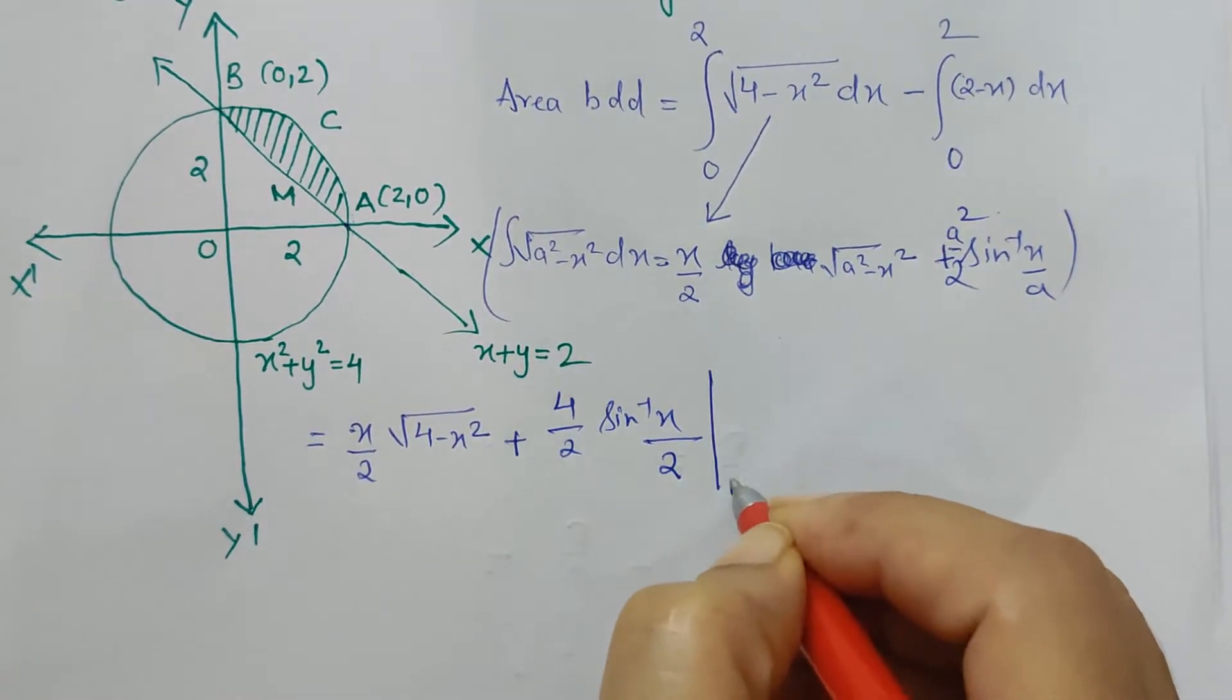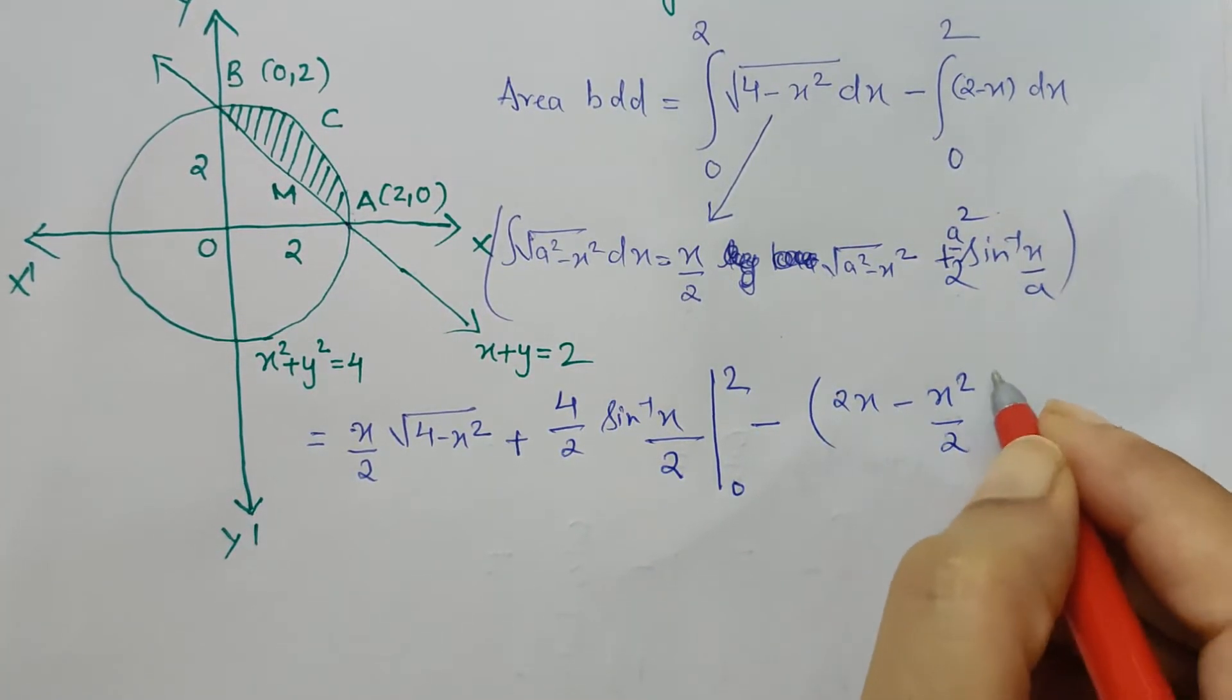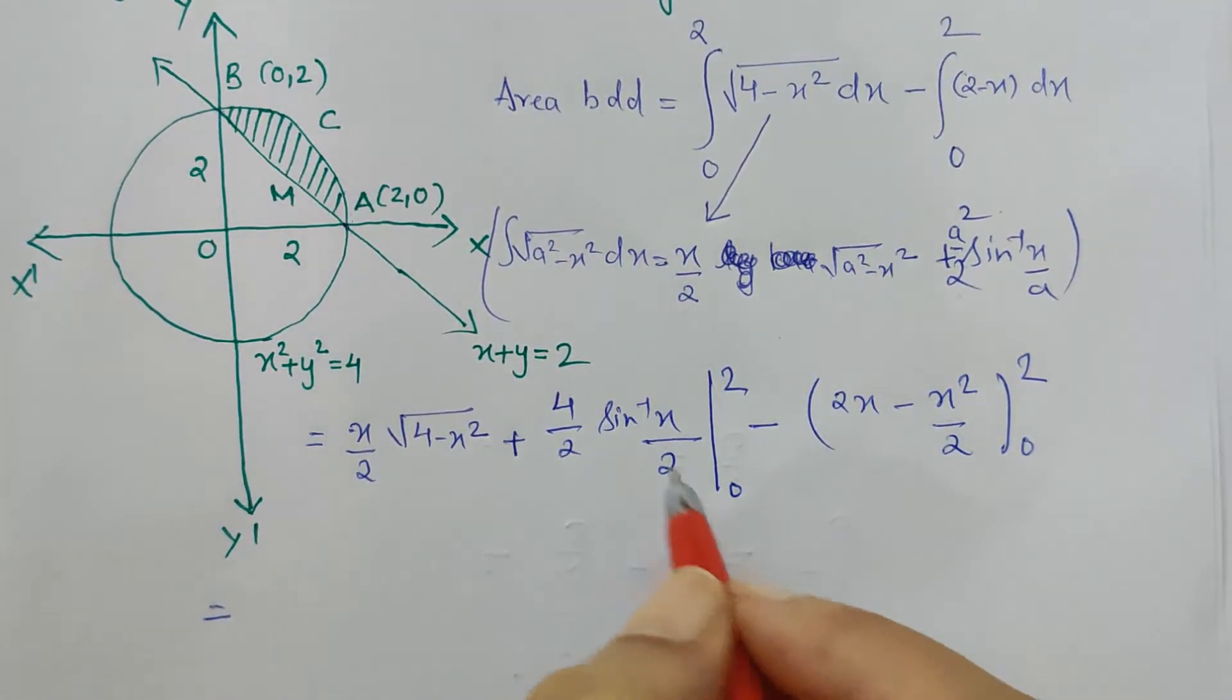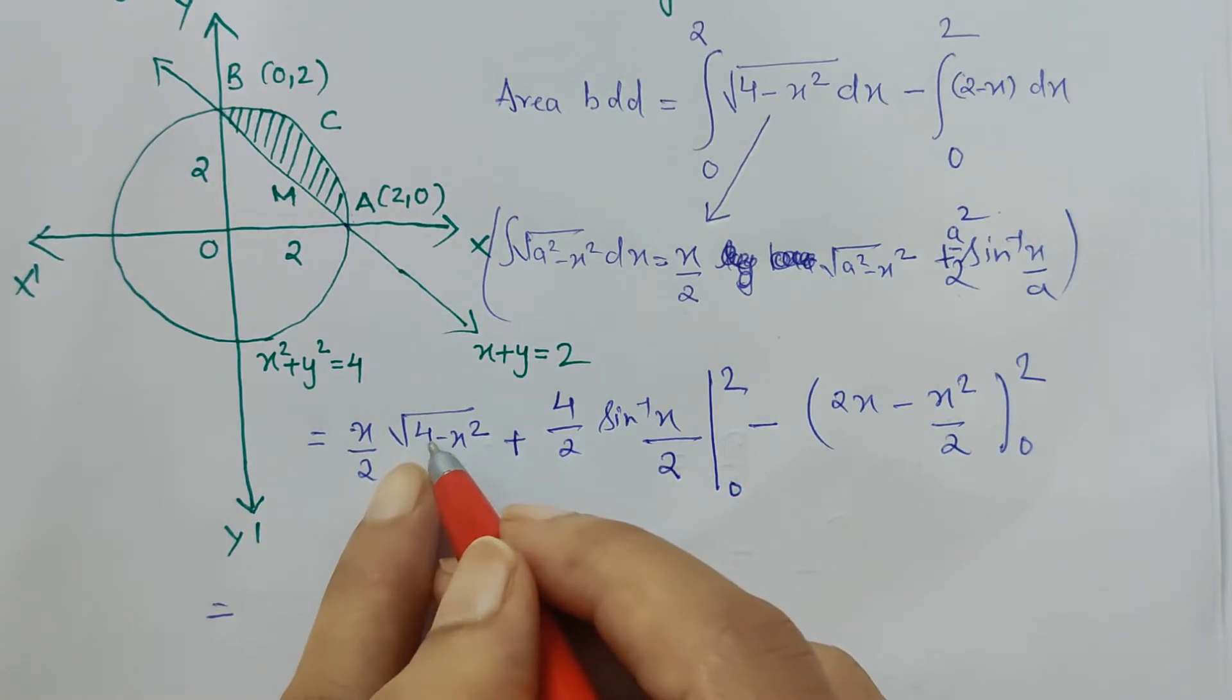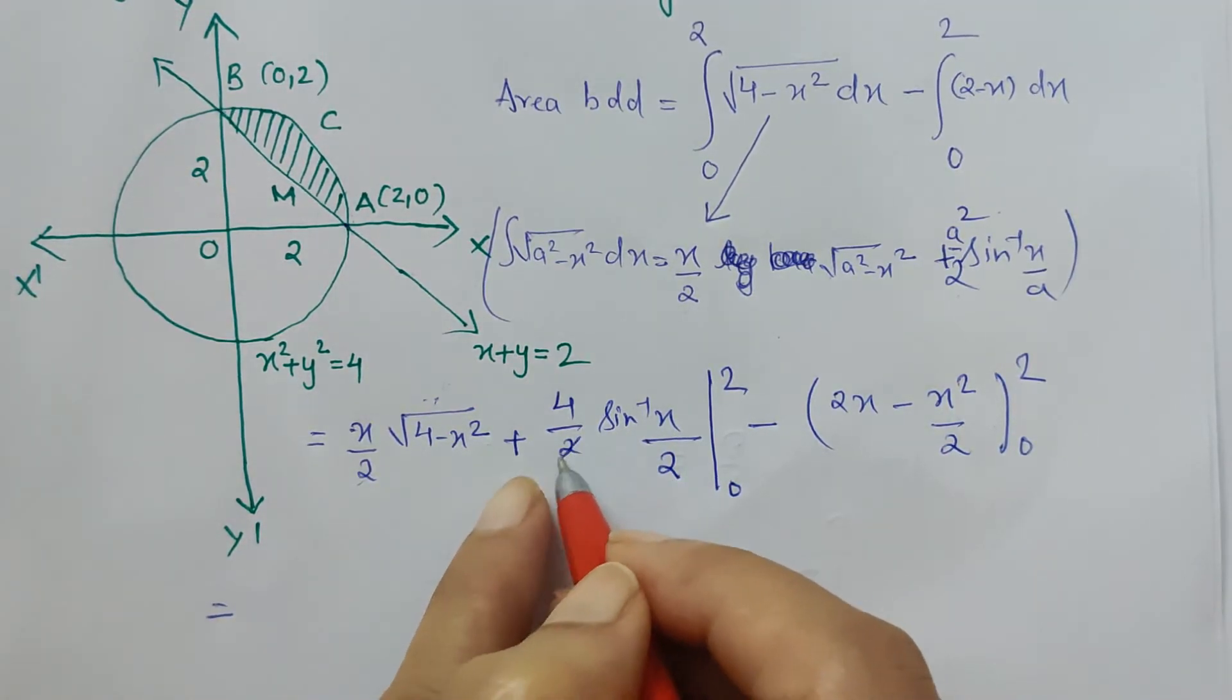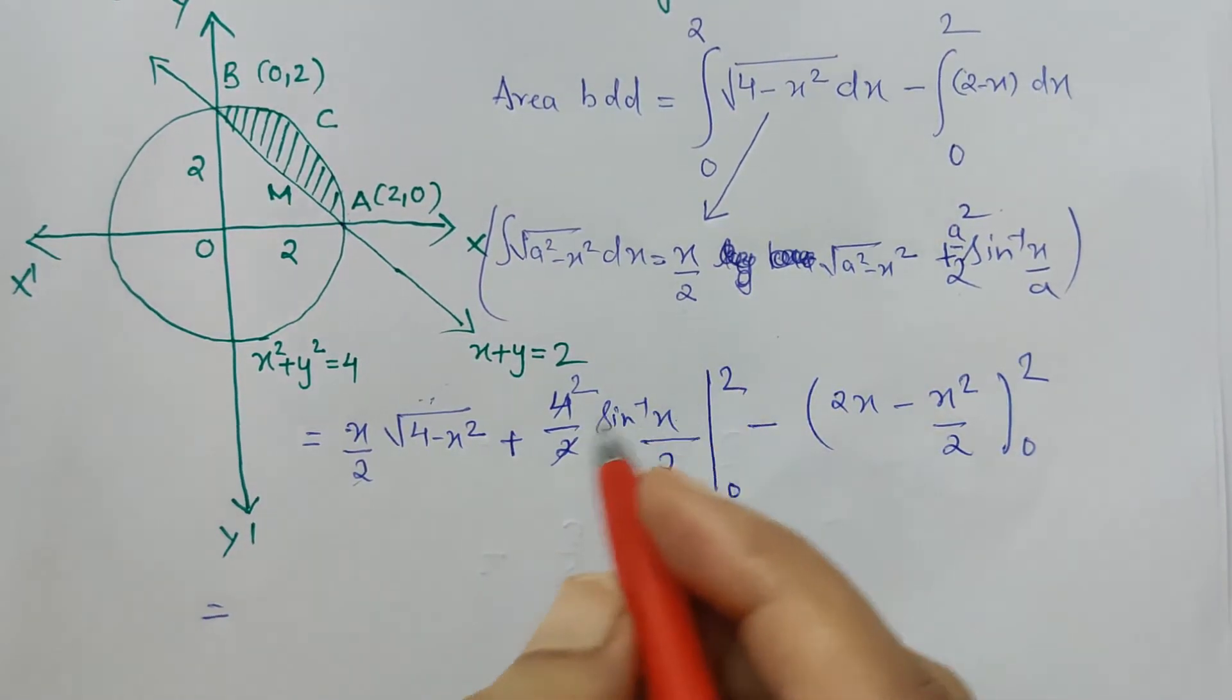Let's integrate the line part: minus [2x - x²/2] from 0 to 2. Now when I put the upper limit, then minus the lower limit. If I put 2 here, 2/2 gets cancelled to 1, and 2² is 4, so 4 - 4 is 0, so this complete term reduces to 0. Now for √(4 - x²), sin⁻¹(2/2) is sin⁻¹(1), which is π/2, so 2 times π/2.